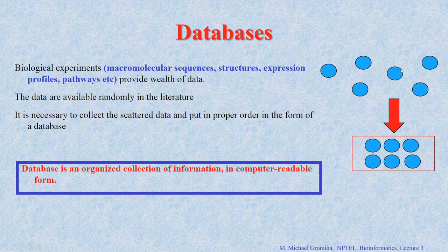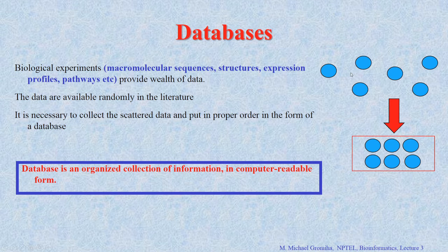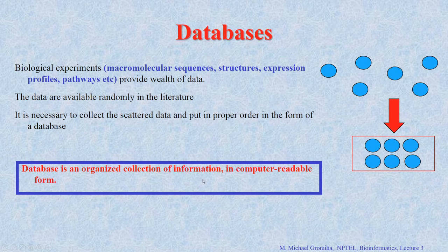The data are scattered in different journal articles, so it is a pain to collect all the data — everyone who wants to do analysis has to collect it themselves, which is time consuming. If you have a database with all the data in one place, then it is easy to extract and use for analysis or development of servers. Having data in an organized, computer-readable form reduces the possibility of errors.